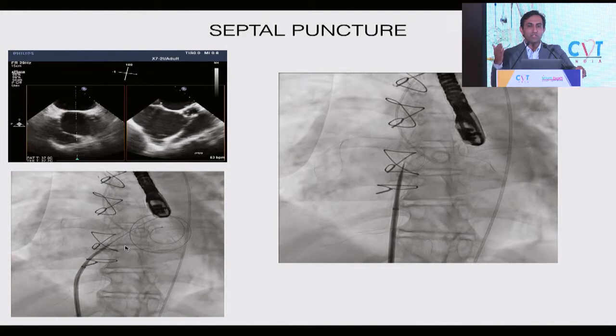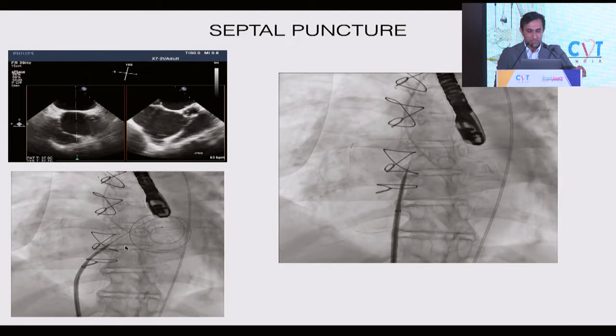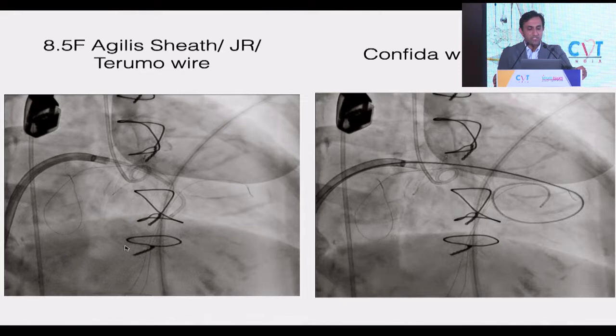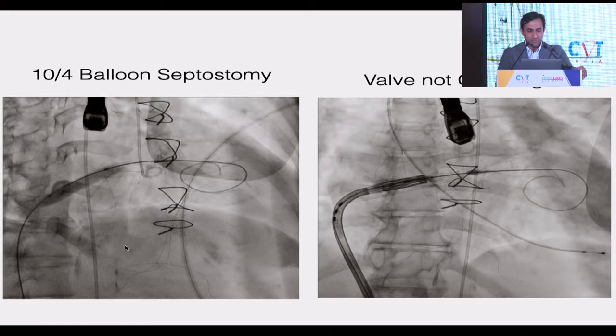On fluoroscopy, before puncture, verify the tip of the needle is at the center of the bioprosthetic valve plane. Go to the RAO to make the bioprosthetic valve a straight line — the TMVR valve-in-valve is a bulky device, and if you are very high on the septum it will be difficult to turn down. I use an SL1 sheath and BRK needle, then an 8.5 French Agilis sheath with JR catheter across the valve, placing a Confida or Safari wire into the LV, then a 10×4mm balloon septostomy.